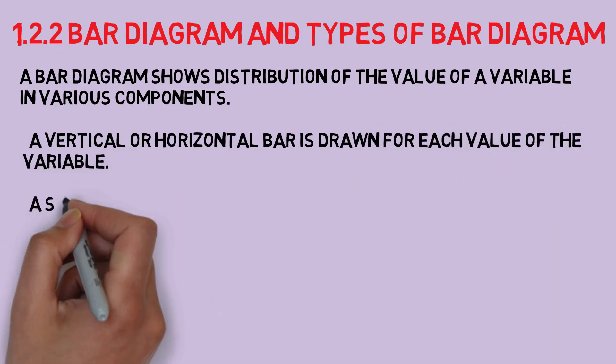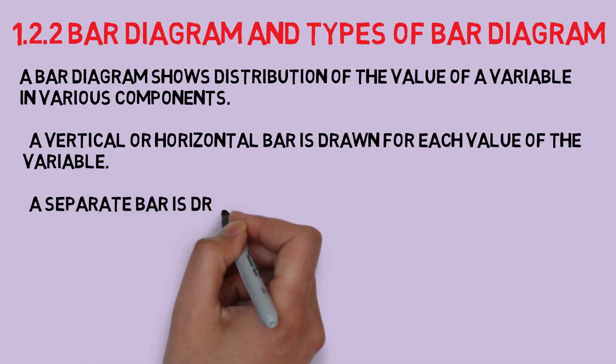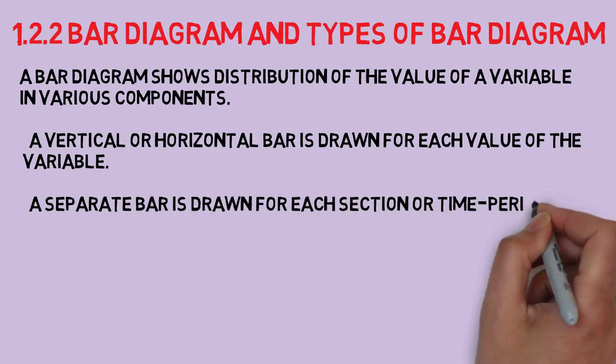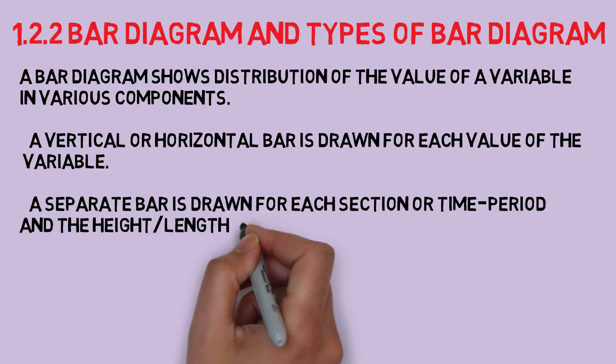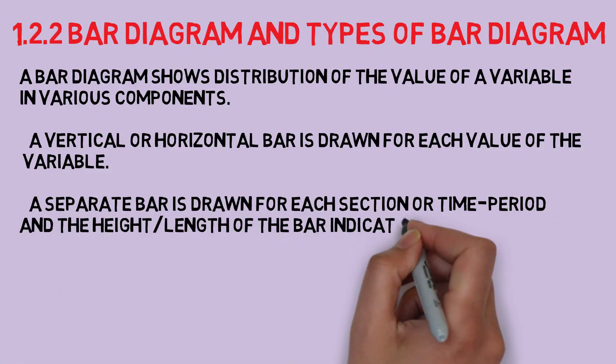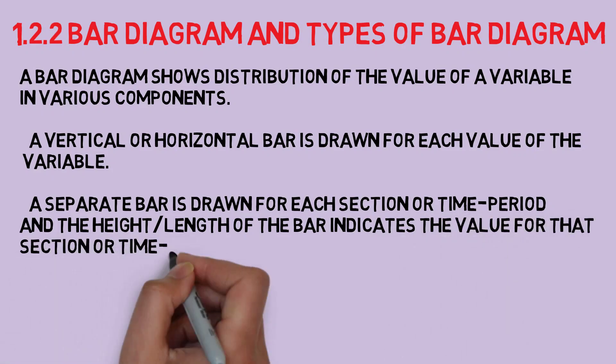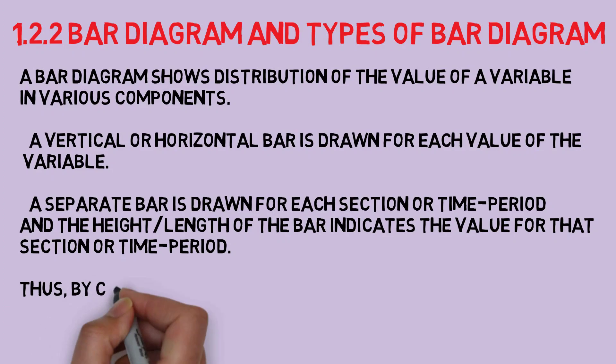There will be two axes in bar graph. One will describe the types of categories being compared and the other will have numerical values. The bars can be either horizontal or vertical. Bar graphs with vertical bars are sometimes called vertical bar diagrams.